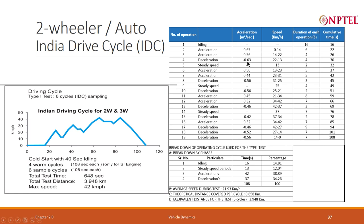Then you are again accelerating — from 0.56 m/s², you go to 0.44 m/s². Then you are decelerating for 3 seconds. Then running at constant speed for 4 seconds. Then decelerating. Then decelerating for 2 seconds. Then again running at constant speed. Then again decelerating.